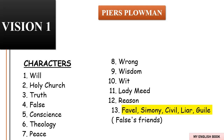Holy Church points Will to a scene where several people are rushing around in preparation for a wedding. The bride-to-be is magnificently dressed and her name is Lady Mead, who is draped in jewels, furs, and luxurious textiles. She is Holy Church's greatest enemy, as Mead is just as well connected and has just as much clout as Holy Church herself. Holy Church says that Mead was instructed by God to marry Truth, but instead Mead is trying to marry a man named False, who only loves Lady Mead's money.